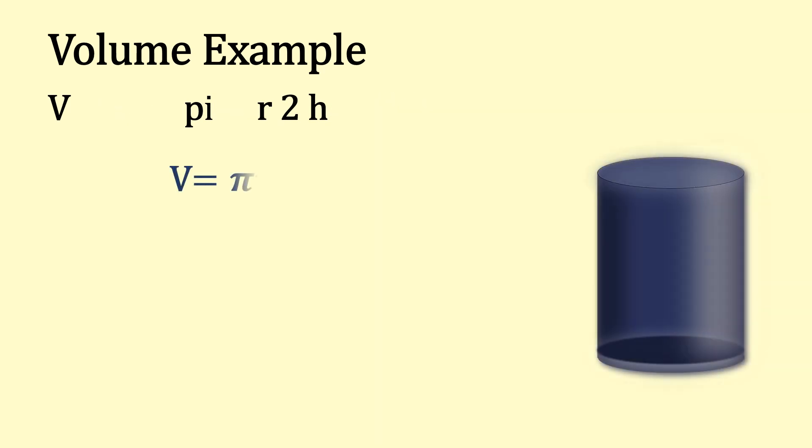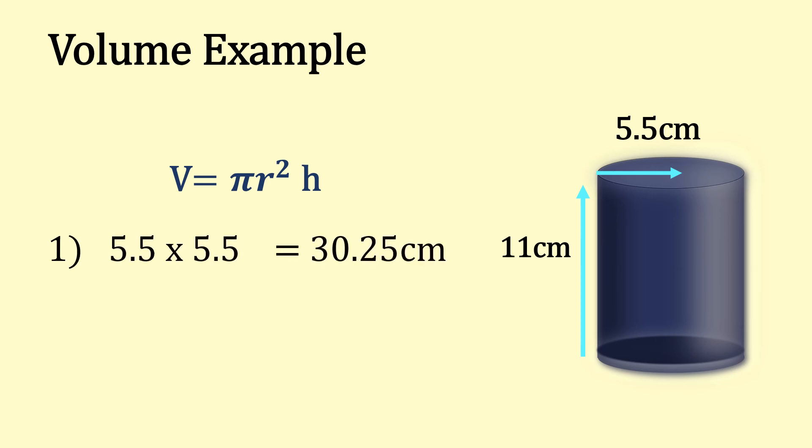So let's do a volume example. So venison pies are too horrible. So there's our formula. So we're going to do the radius squared times π first. So that's 5.5 times 5.5, which gives us 30.25.